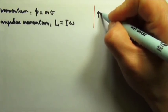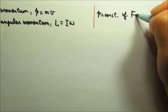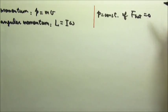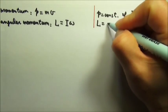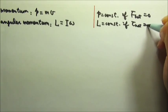We know that the momentum is conserved if the net force is zero. That means the angular momentum would be conserved if the net torque is zero.